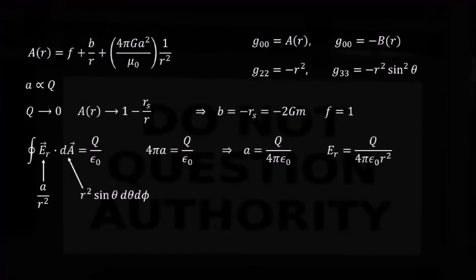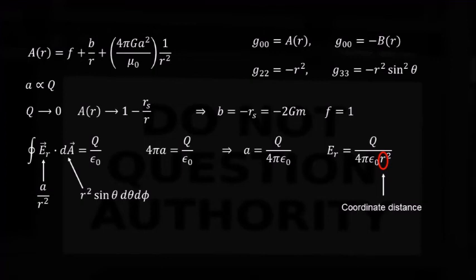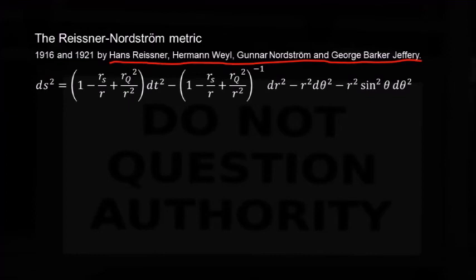This is a familiar result from classical electrodynamics. It seems that the introduction of curved spacetime did not affect the Coulomb field generated by a point electric charge, except that now the r distance is not the true distance of real space, it is a coordinate distance. So, we have our metric. It is called the Reissner-Nordstrom metric and was derived between 1916 and 1921 by these guys. According to Wikipedia.